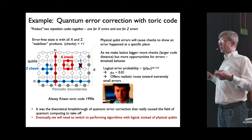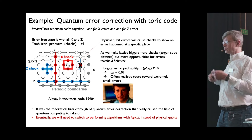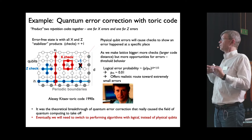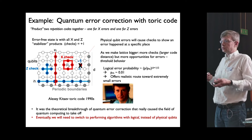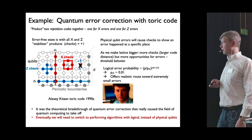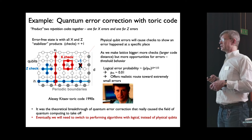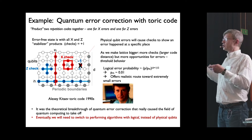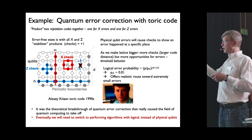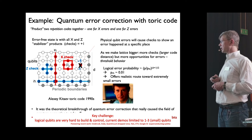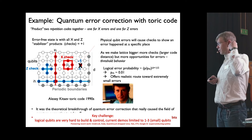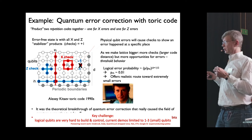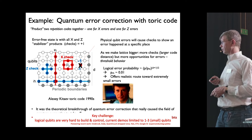This theoretical breakthrough of error correction caused the field to take off. Most people believe we will need to switch from performing algorithms with noisy physical qubits to performing them with logical qubits. Realizing these error correction ideas is in practice quite hard, requiring large redundancy and complicated multi-body checks, so current demonstrations have been limited to very small numbers of qubits.